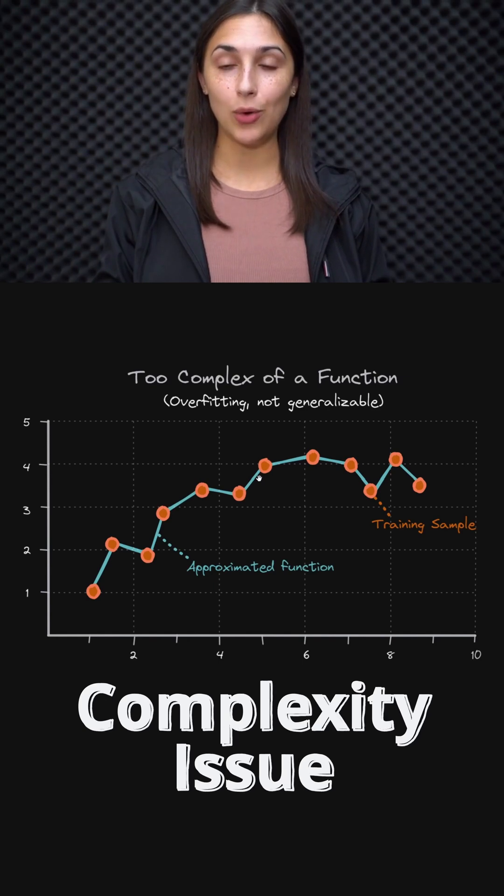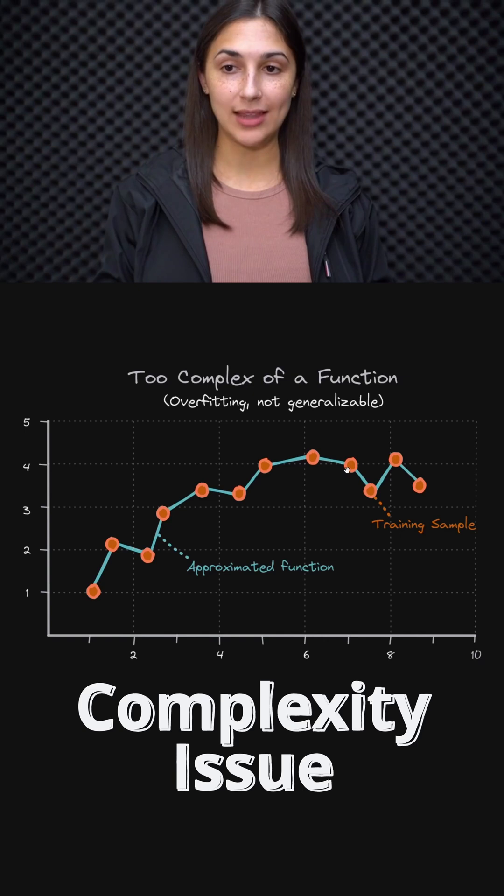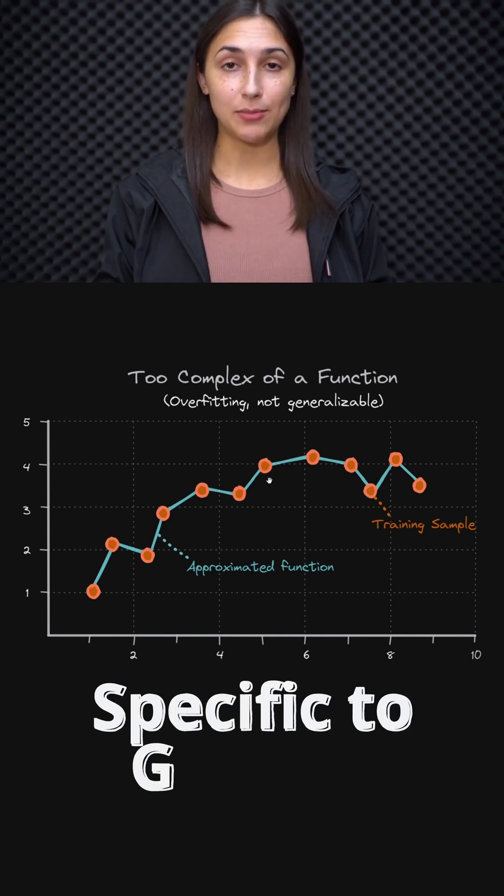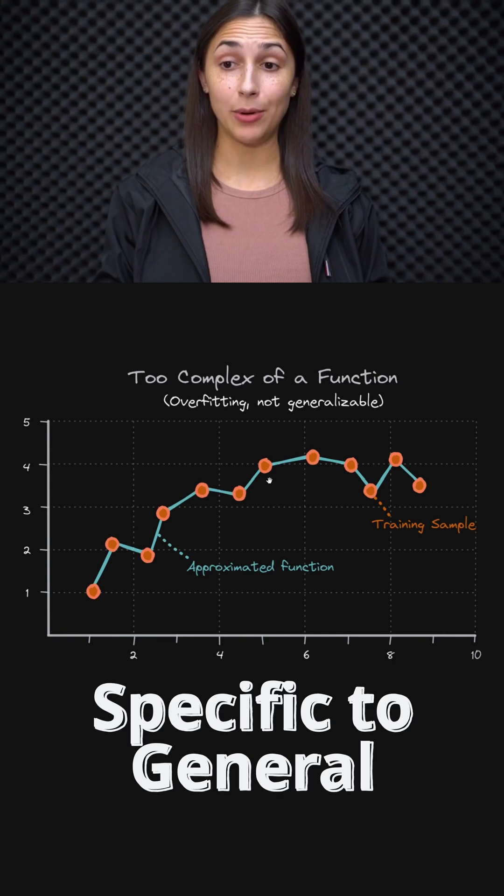We can see that essentially the function has no room to fit any data outside of the training set given how specific it is to these samples. In other words, we shouldn't expect this model to generalize well because the function it has approximated is too specific to the training set.